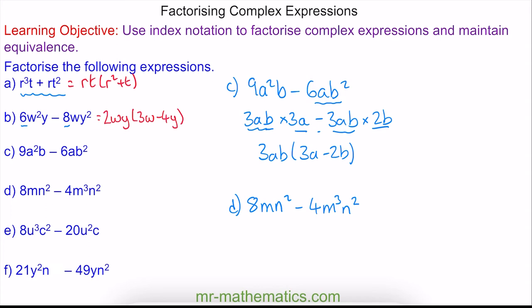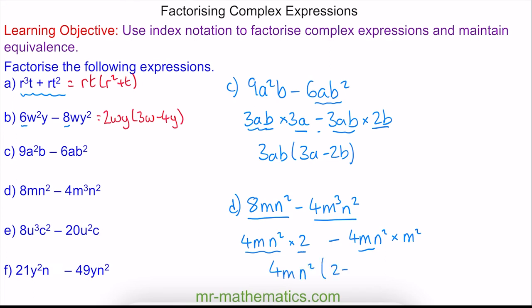For question D, we can see that 4n squared is the common factor. We multiply this by 2 to make the first term, and because these are common, we write them on the outside, with 2 minus n squared on the inside.